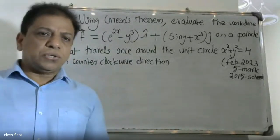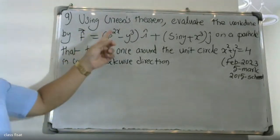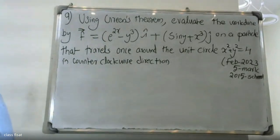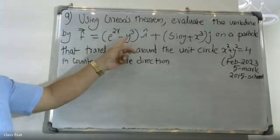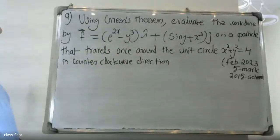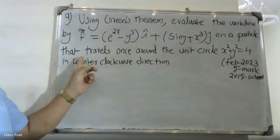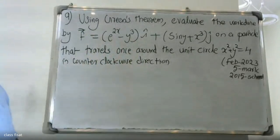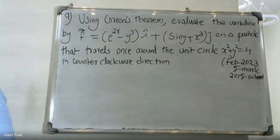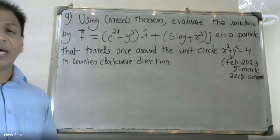Good morning students. This is a university question. Using Green's theorem, evaluate the work done by F. Vector F is equal to (2x minus y³) i plus (sin y plus x³) j on a particle that travels once around the unit circle x² plus y² equal to 4 in the counterclockwise direction.